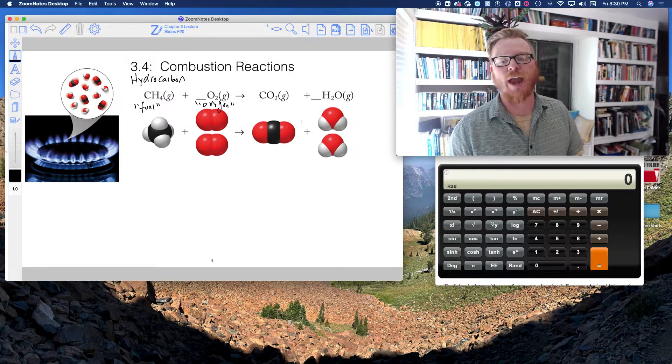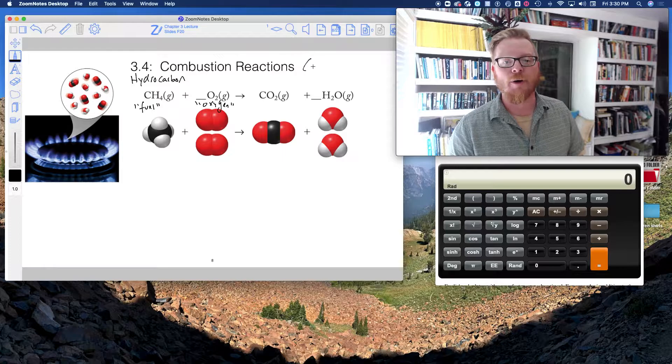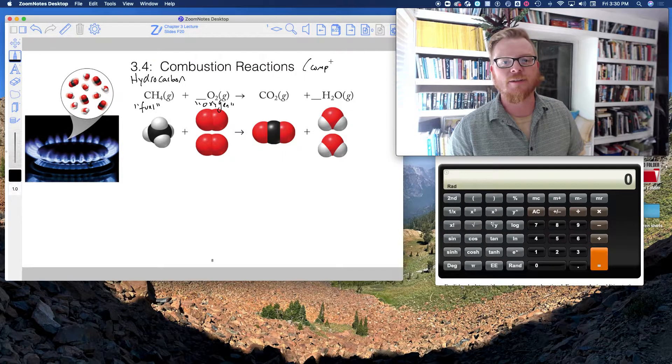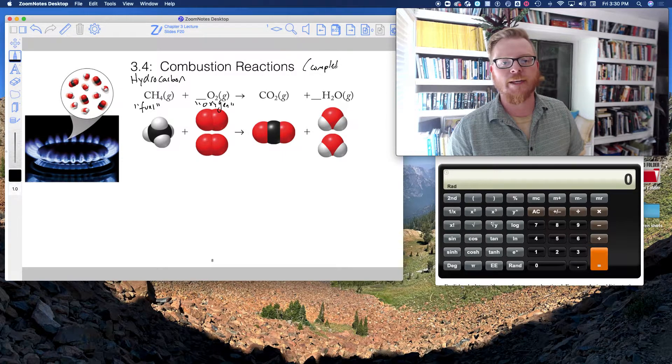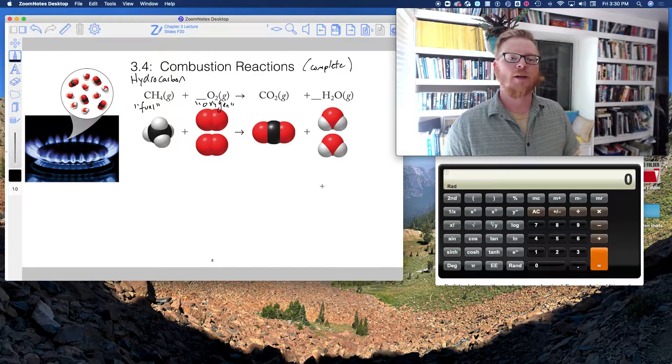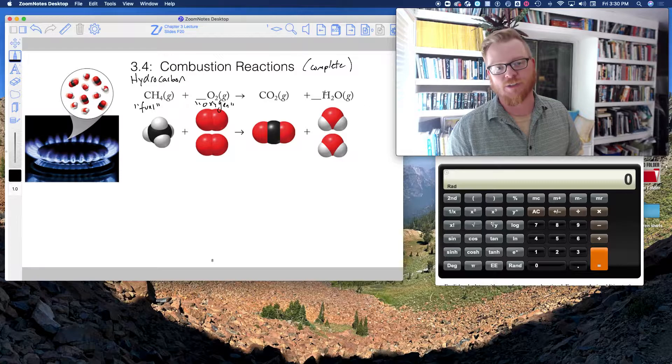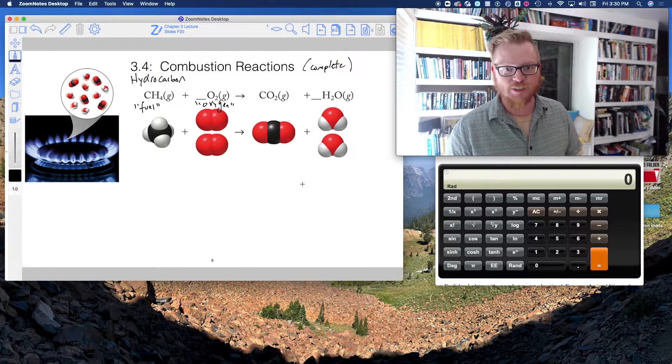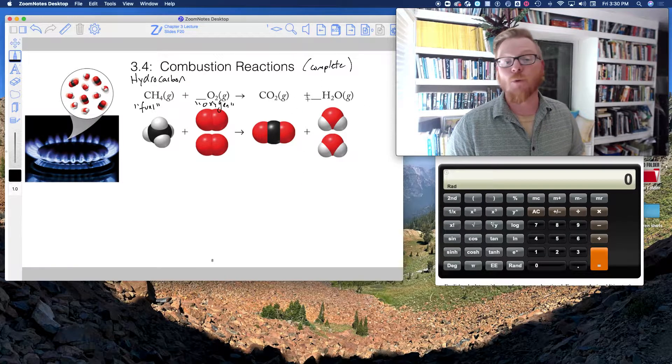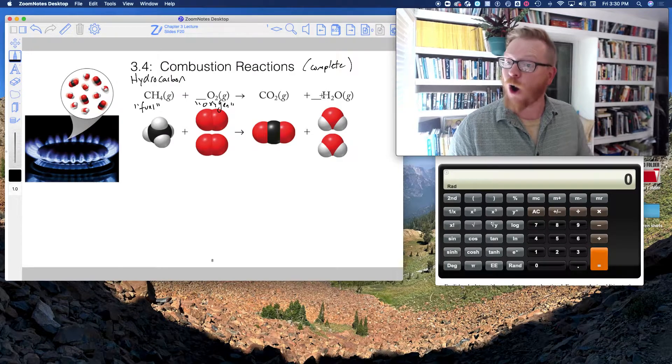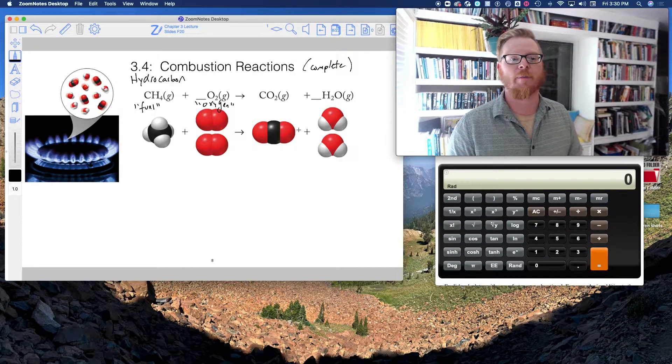The products of combustion reaction for a, I'm going to write complete, complete combustion reaction. And so that means all of the fuel and all of the oxygen has been consumed to form CO2 and water. You always make carbon dioxide and water, always. These are always the products of a combustion reaction.